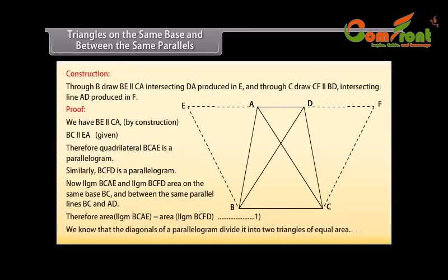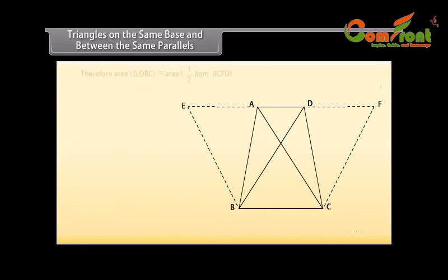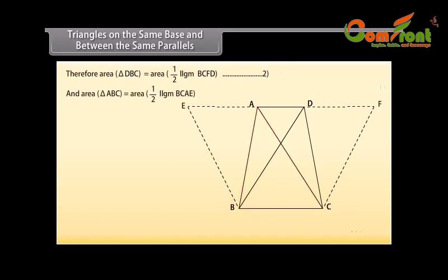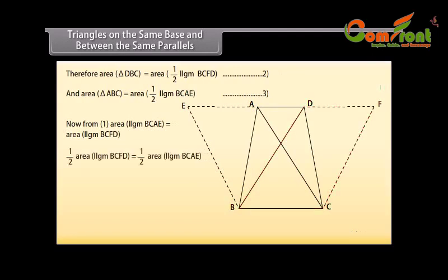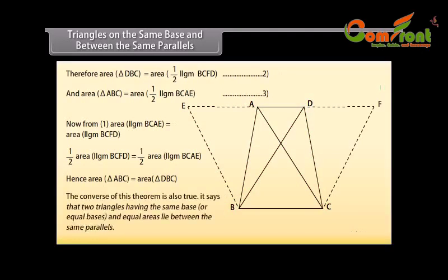We know that the diagonals of a parallelogram divide it into two triangles of equal area. Therefore, area of triangle DBC is equal to half of area of parallelogram BCFD. Mark it as two. And area of triangle ABC is equal to half of area of parallelogram BCAE. Mark it as three. From one, area of parallelogram BCAE is equal to area of parallelogram BCFD. Hence, area of triangle ABC is equal to area of triangle DBC. The converse of this theorem is also true: two triangles having the same base or equal bases and equal areas lie between the same parallels.